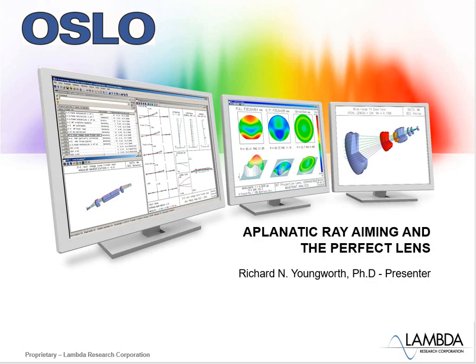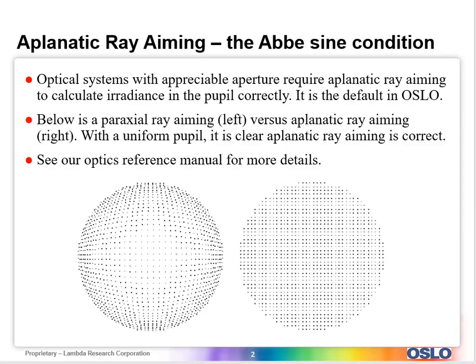So the first thing is aplanatic ray aiming and the Abbe sine condition. You can look up the Abbe sine condition and get some understanding of how optical systems with an appreciable aperture, this means in the non-paraxial region, in our manuals we say over about a numerical aperture of one.